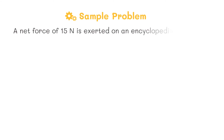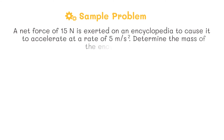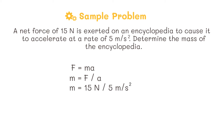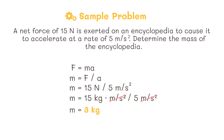Let's have one last example. This time, we are asked to find the mass of an encyclopedia. Using the formula force equals mass times acceleration, we rearrange to get mass equals force divided by acceleration. We divide the force of 15 Newtons by the acceleration of 5 meters per second squared. Since Newton is equivalent to kilogram meter per second squared, we can cancel out meter per second squared, which leaves us with kilograms. 15 divided by 5 equals 3 kilograms, which is the mass of the encyclopedia.